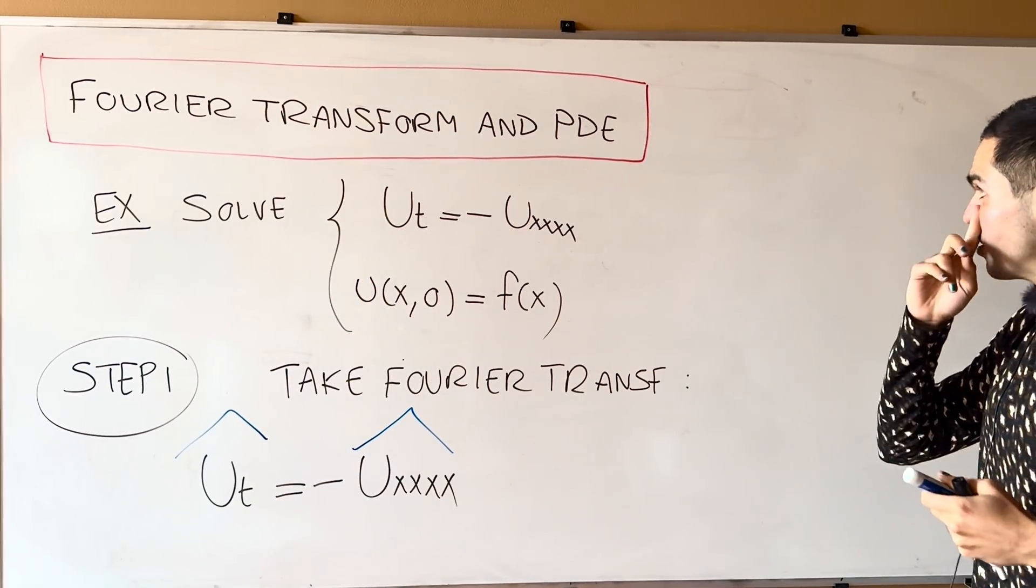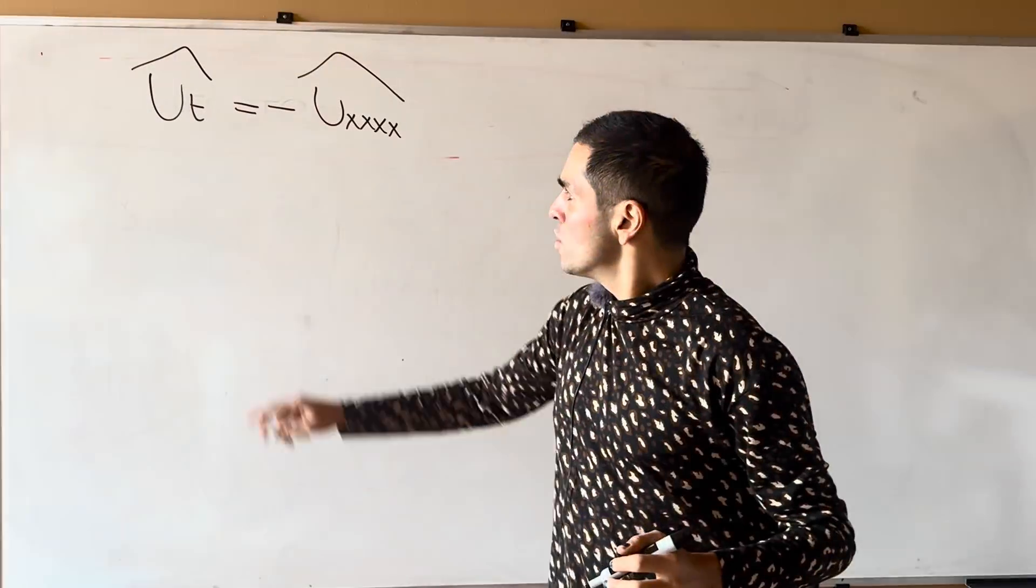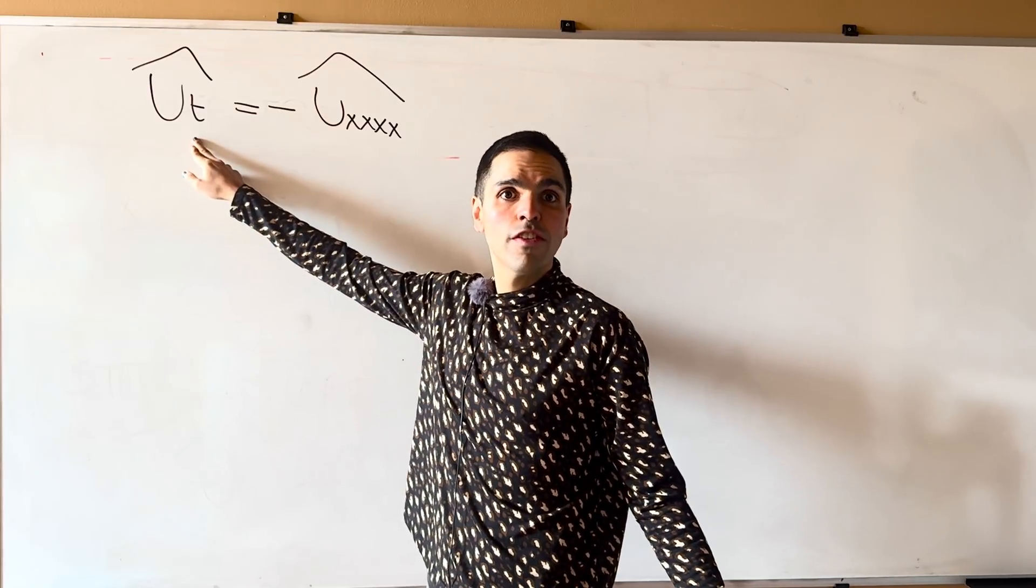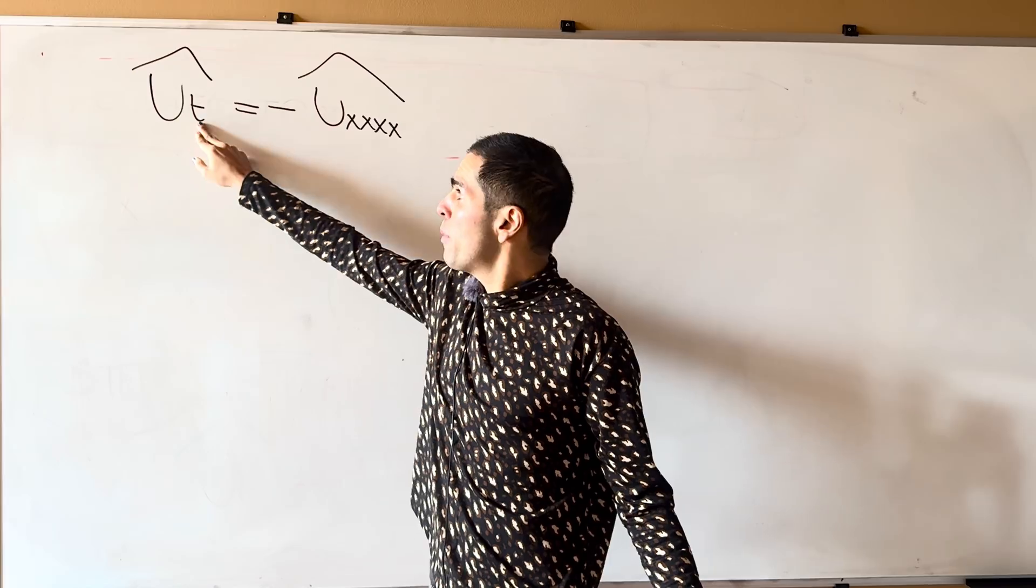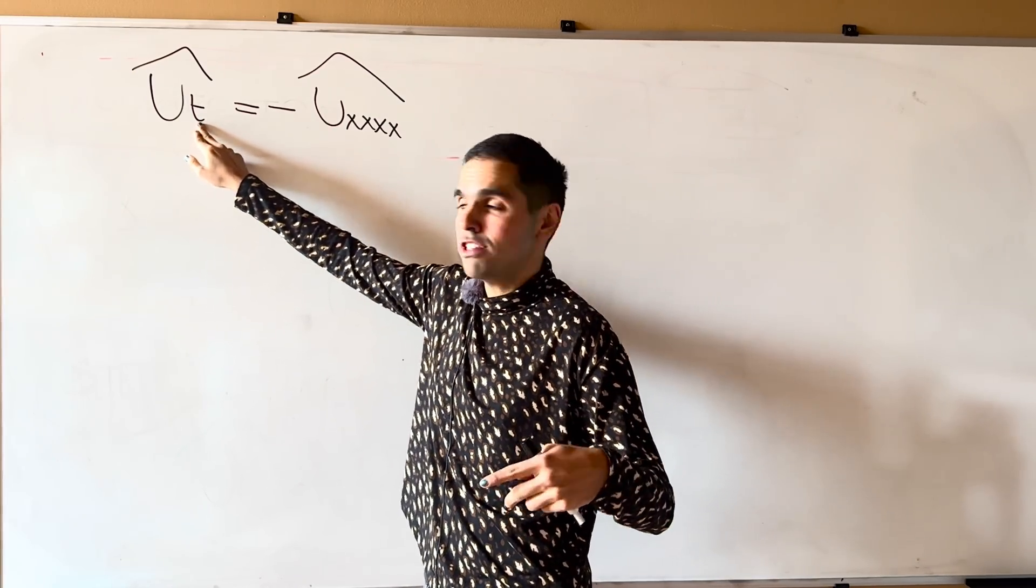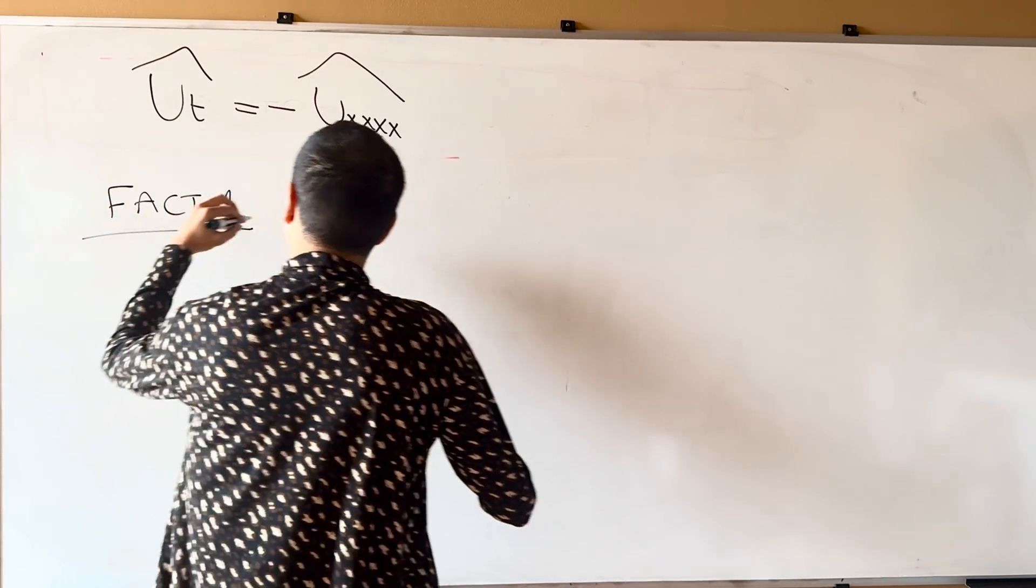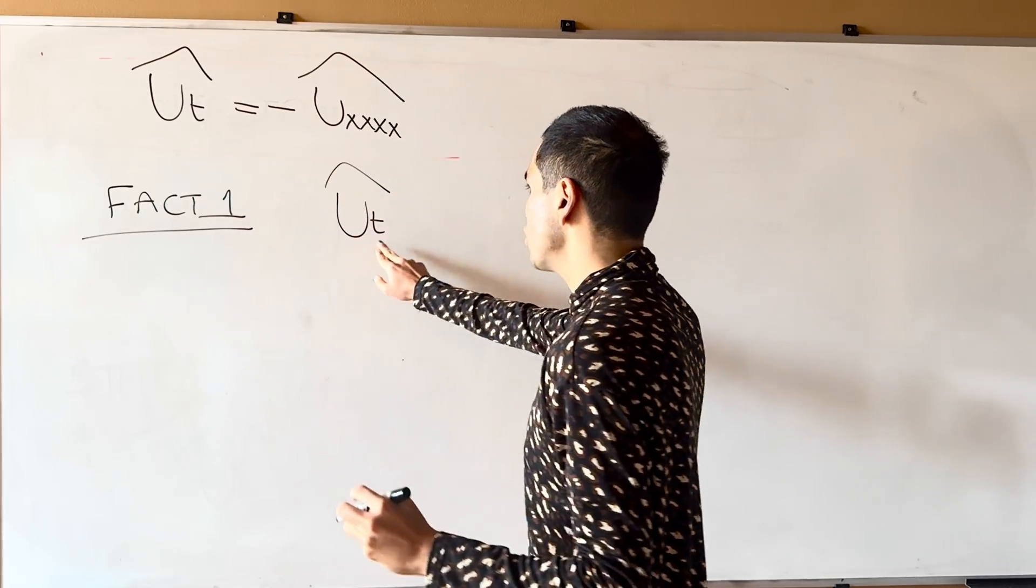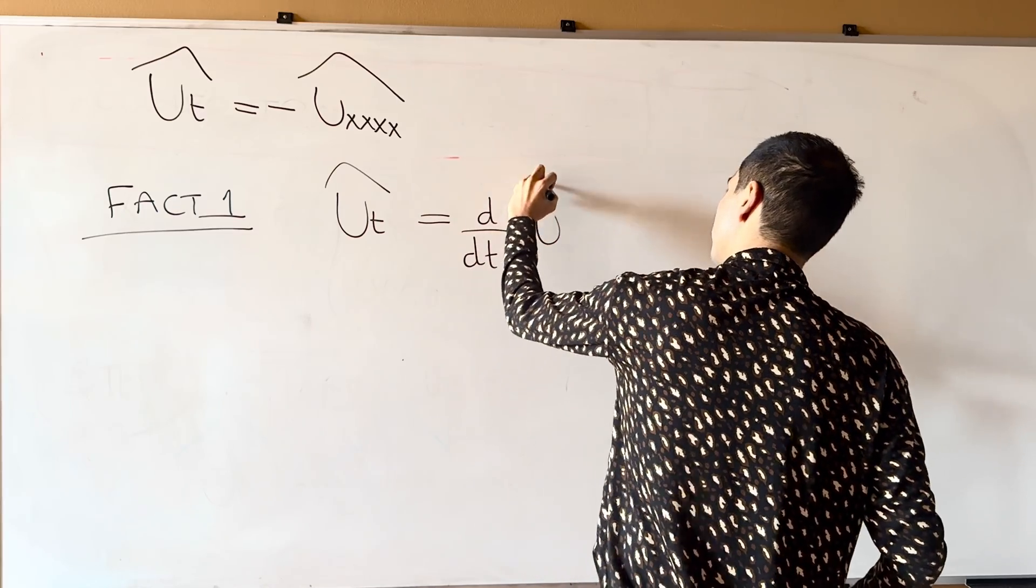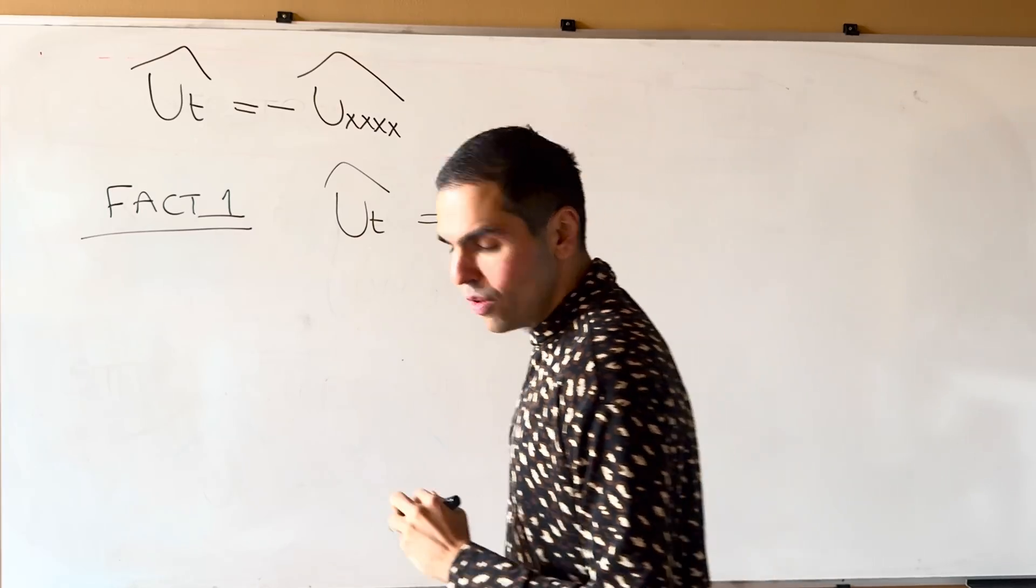I would like to remind you of two facts that we'll use now. First of all, we are taking the Fourier transform with respect to X, and in particular, T acts like a constant with respect to X. Therefore, when you take the Fourier transform of UT, that's just the same as taking the derivative with respect to T of the Fourier transform.